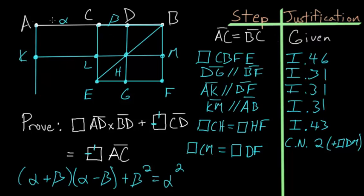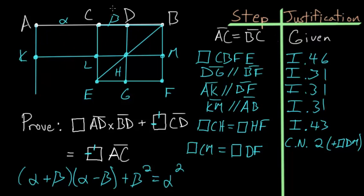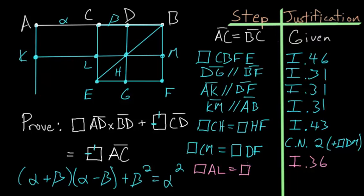We also notice that since BC and AC are equal, and these two parallelograms have equal bases and lie within the same parallels — both ending on line KM and starting on line AB — by Book 1 Proposition 36 these two parallelograms are equal. So parallelogram AL equals parallelogram CM. By Common Notion 1, things equal to the same thing are equal to each other, so all three parallelograms AL, CM, and DF are equal.